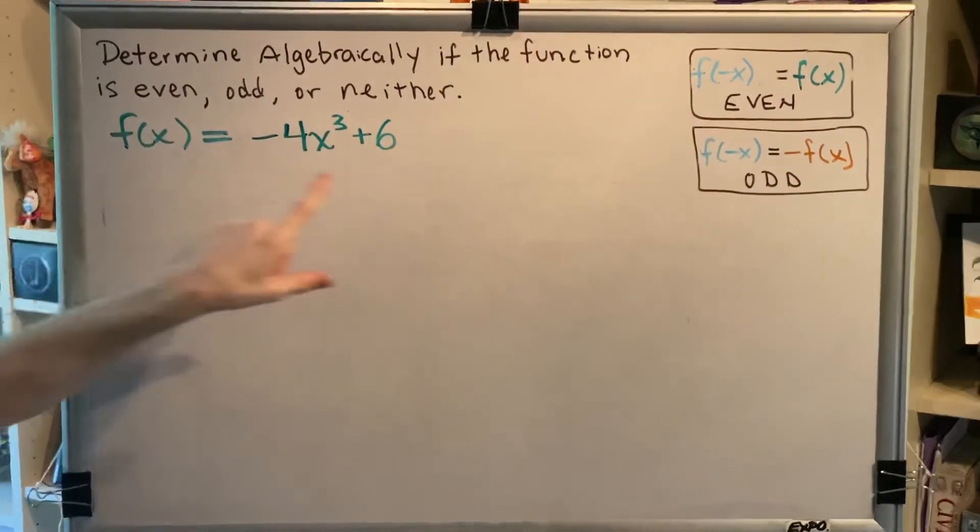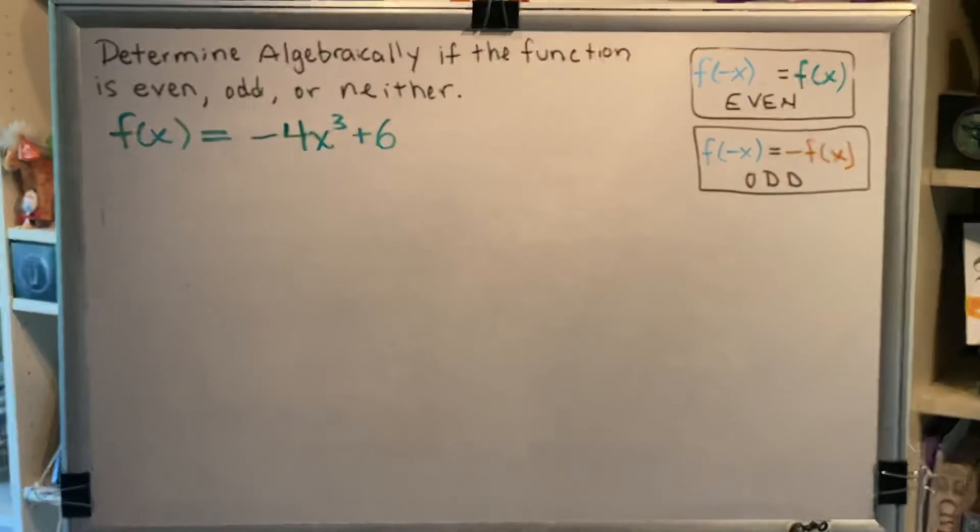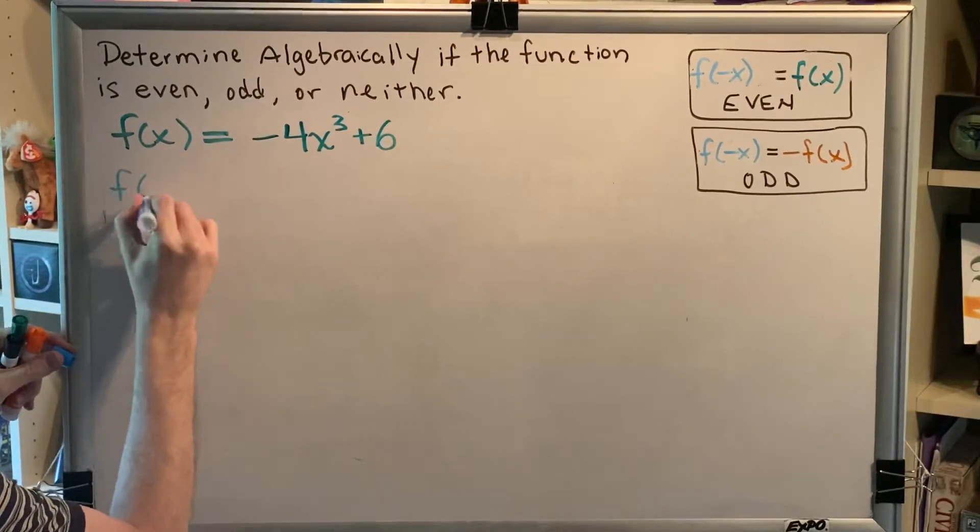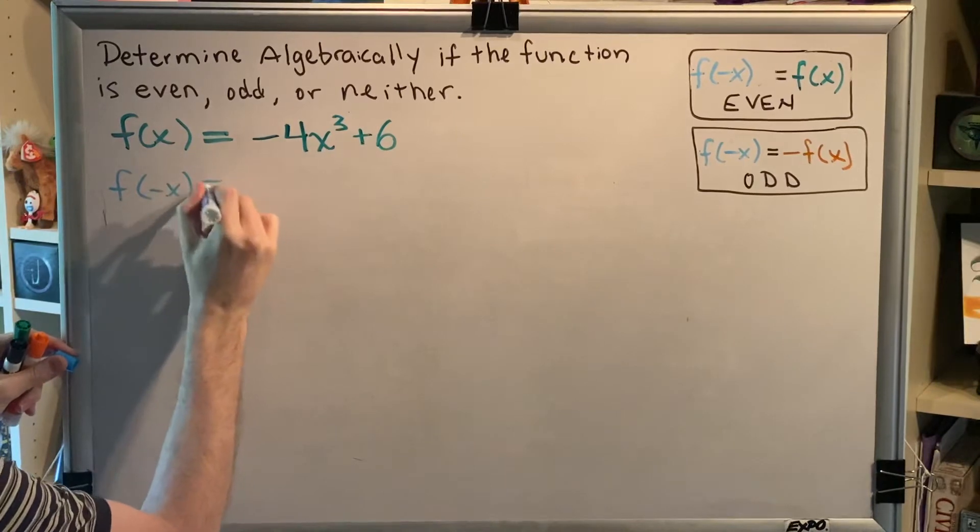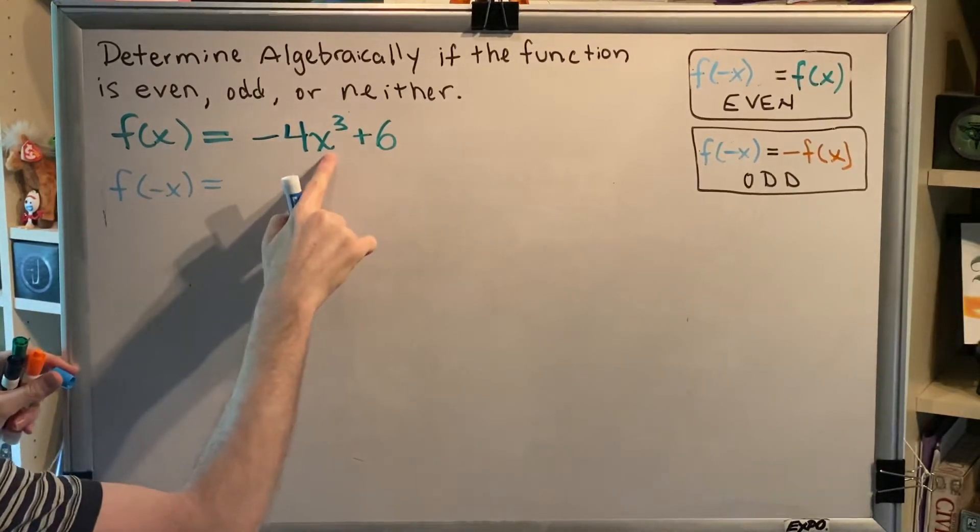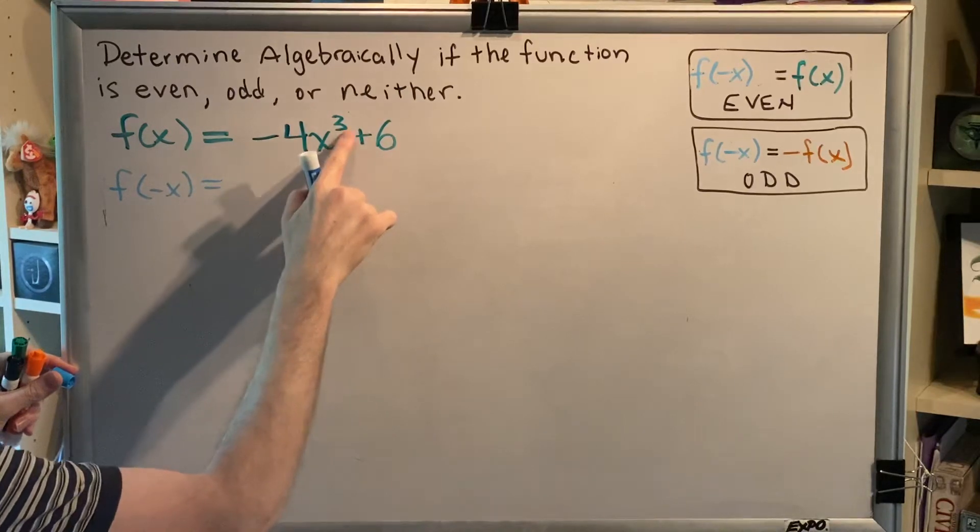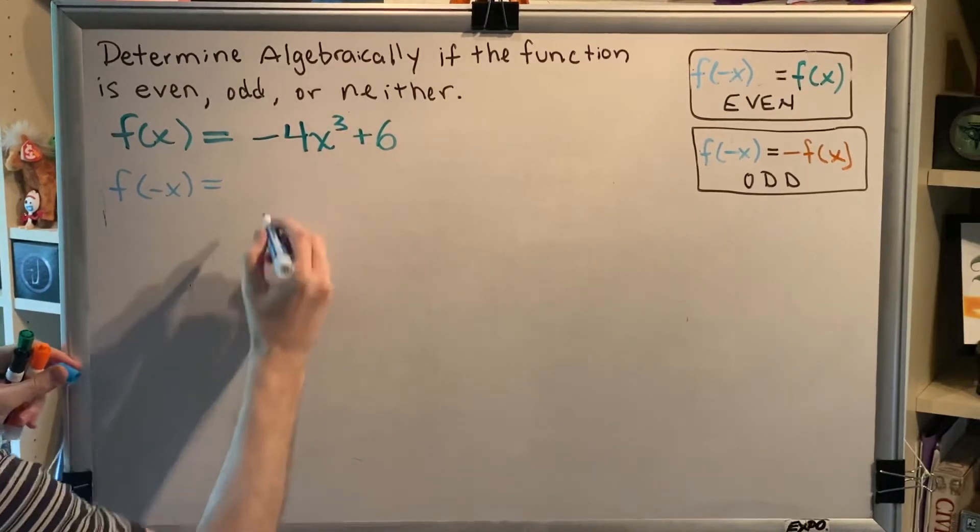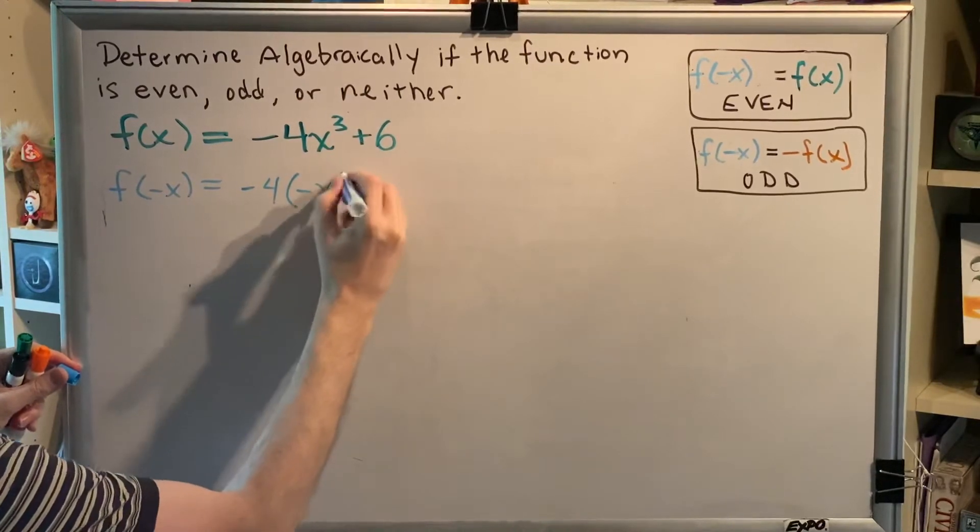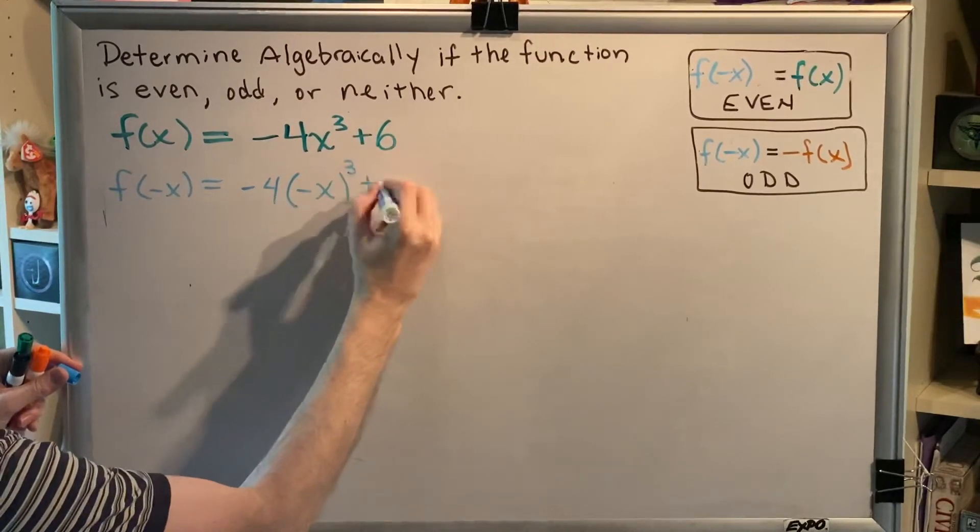So the next task is for us to find the light blue, find f of negative x. We do that with substitution. So f of negative x is equal to, everywhere we see an x, we put a negative x, including this one. And because this x has both an exponent and a multiplier, parentheses are necessary. So we have negative 4, parentheses, negative x, close parentheses, cubed, plus 6.